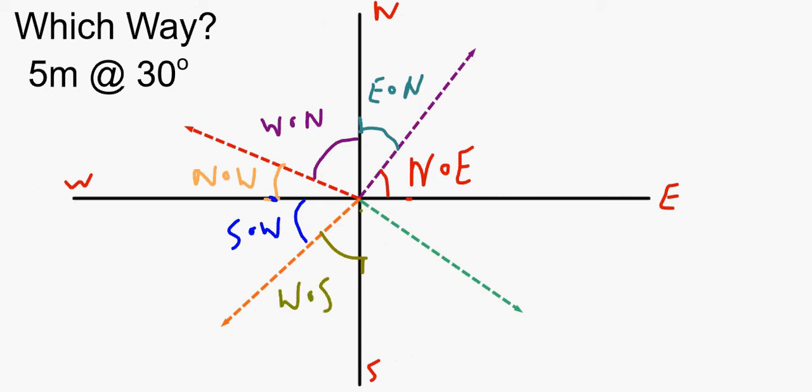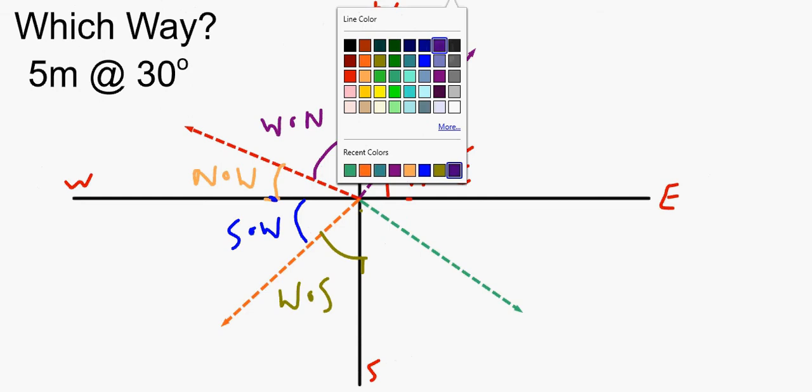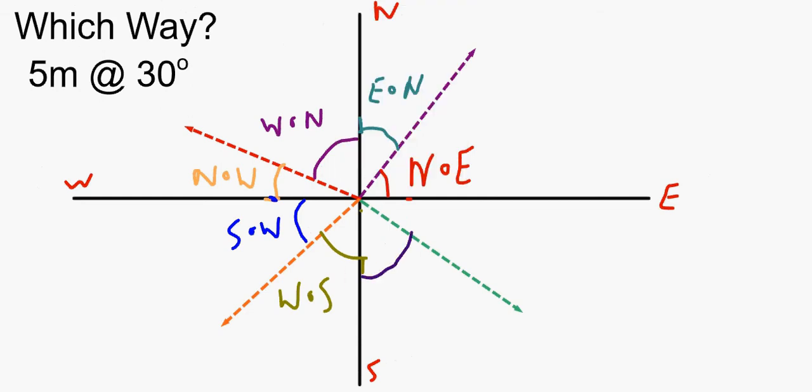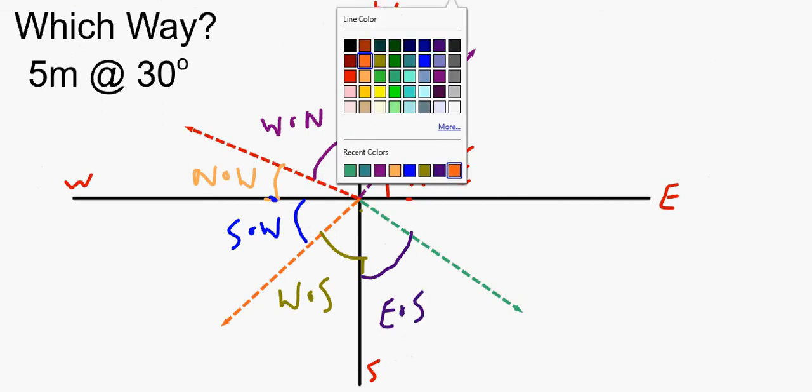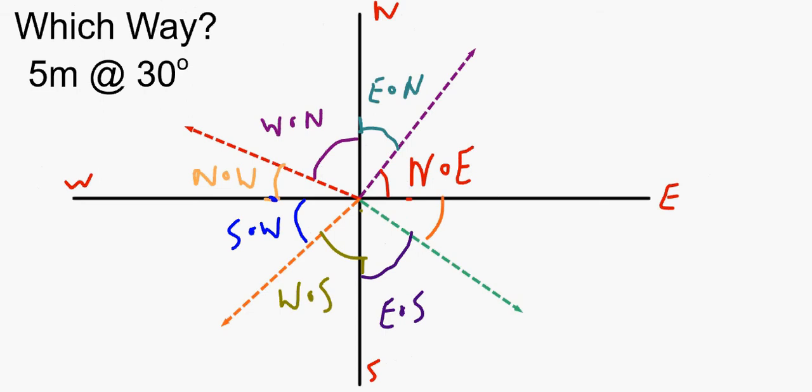And it goes around similarly like that. This right here, facing south turning to the east, so this is east of south. And our last one right in here, I'm facing east, I have to turn to the south: south of east.